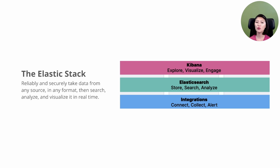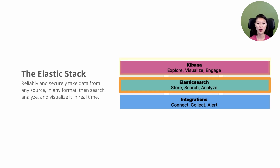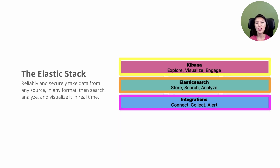Before we get started, let's do a quick recap. If you're a developer working with data, the Elastic stack is a great tool to have on your belt. The stack consists of three parts: Elasticsearch, Kibana, and integrations. With the stack, you can take data from any source in any format, then search, analyze, and visualize in real time.